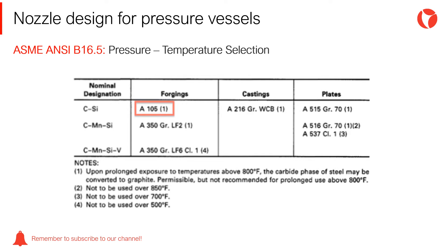These flanges have standardized dimensions and have been designed to withstand specific design conditions — a pressure-temperature range. That is why they are not calculated, but selected. Flanges up to 24 inches nominal pipe size, to be used in pressure vessels designed according to Section 8 Division 1, must be selected from the ANSI ASME B16.5 standard.